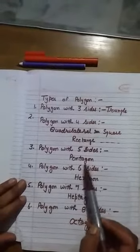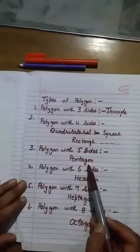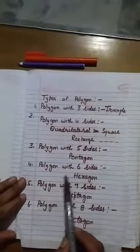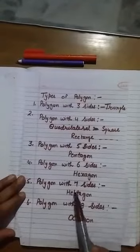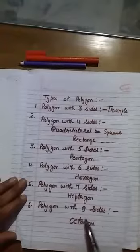Polygon with five sides is called pentagon. Polygon with six sides is called hexagon. Polygon with seven sides is called heptagon. Polygon with eight sides is called octagon.